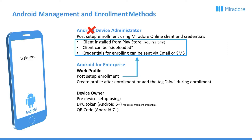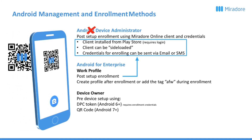Next up is QR code enrollment, starting with Android 7. Once you're at the welcome screen, you can tap the welcome text six times. That will launch a QR code reader, which you can use to scan a QR code from within Mirador Online, which will then start the enrollment process into Device Owner mode.